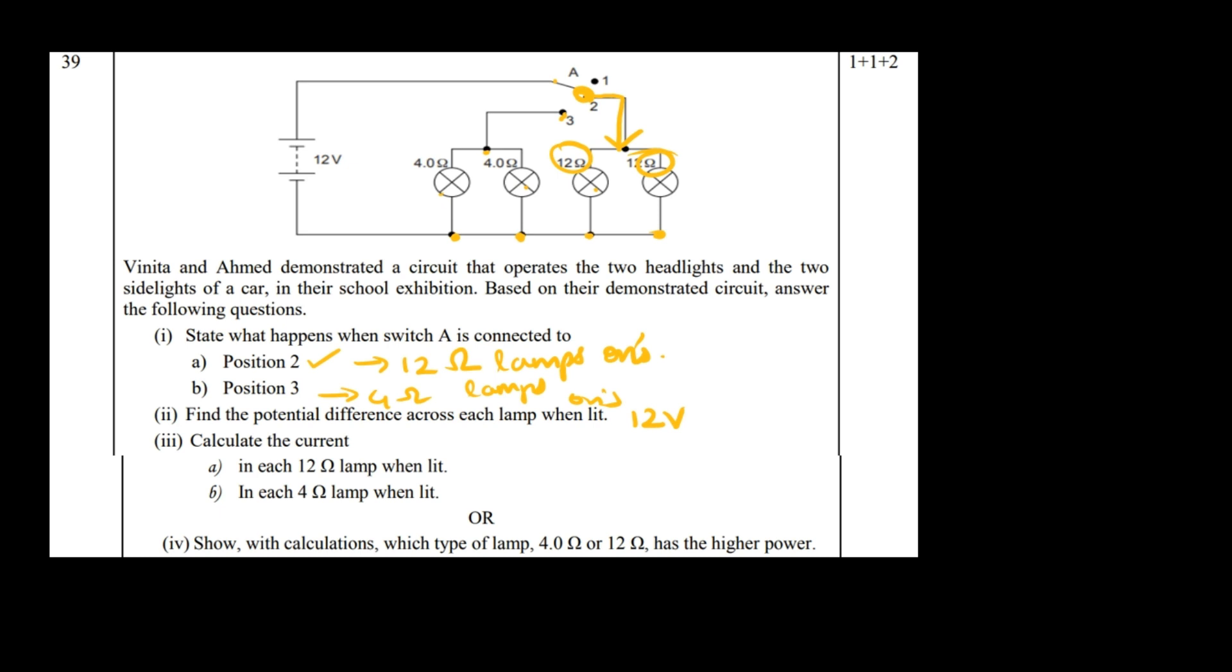Calculate the current in each 12-ohm lamp when it's lit. How do we calculate the current? V = IR. In the first case, 12 = I × 12, so I = 1 ampere. In the second case, 12 = I × 4, so I = 3 amperes. The answer is 3 amperes.